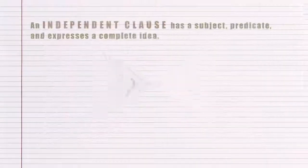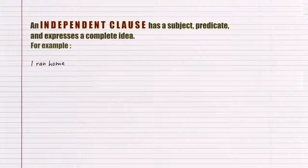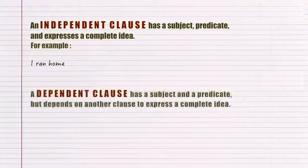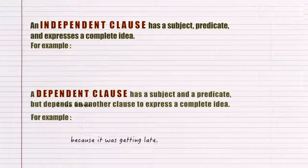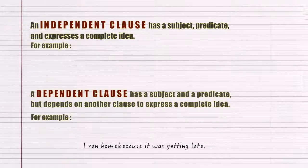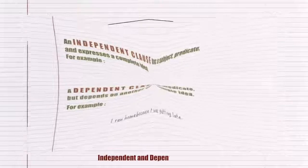An independent clause expresses a complete idea. For example, 'I ran home.' A dependent clause needs another clause to express a complete idea. For example, 'because it was getting late.' To put them together, you have a complete sentence.